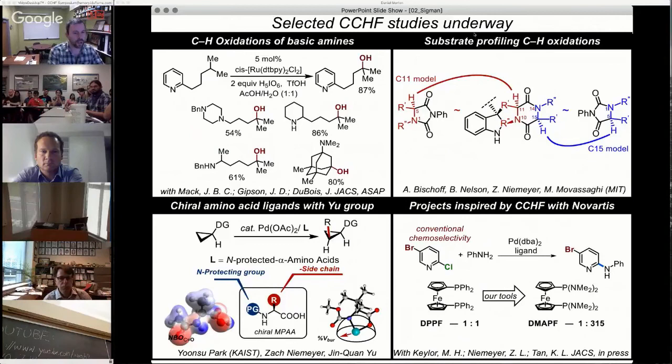We've also done a study in the bottom corner. This is mainly with Jin-Quan Yu's group, but I want to make a call out to Yansu Park, who came through KAIST as an exchange student. This is all enabled by the CCHF. What we've been trying to do here is understand structure-function relationships of Jin's amazing amino acid ligands in the CH functionalizations. We have a very nice set of data at this stage, and this is in review at this time.